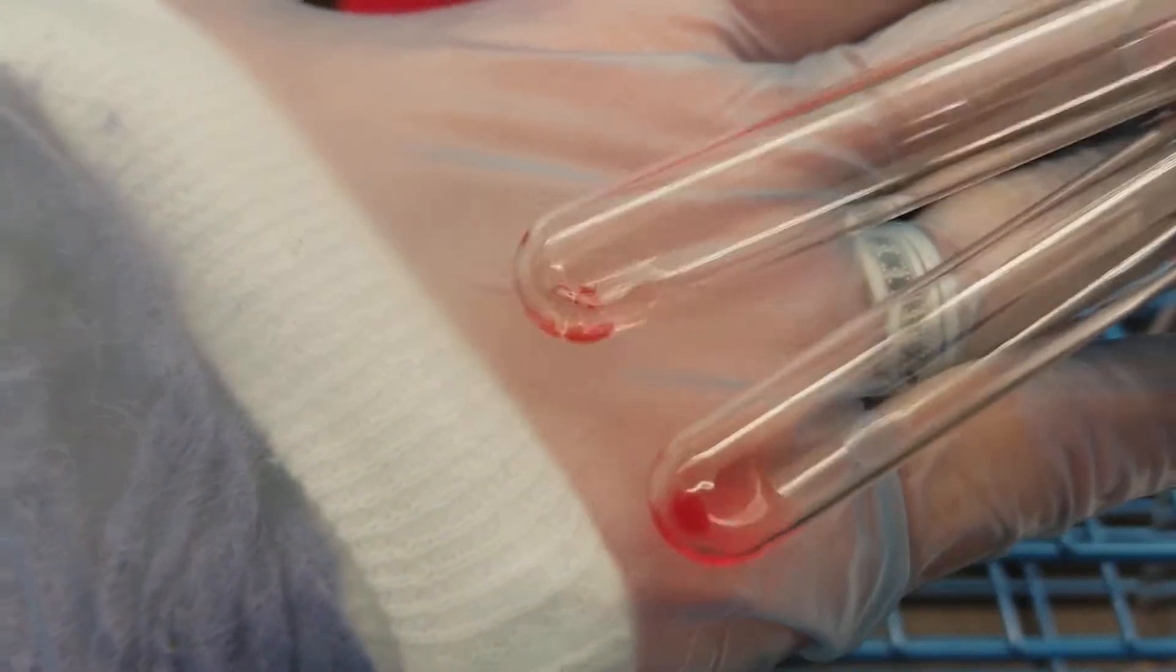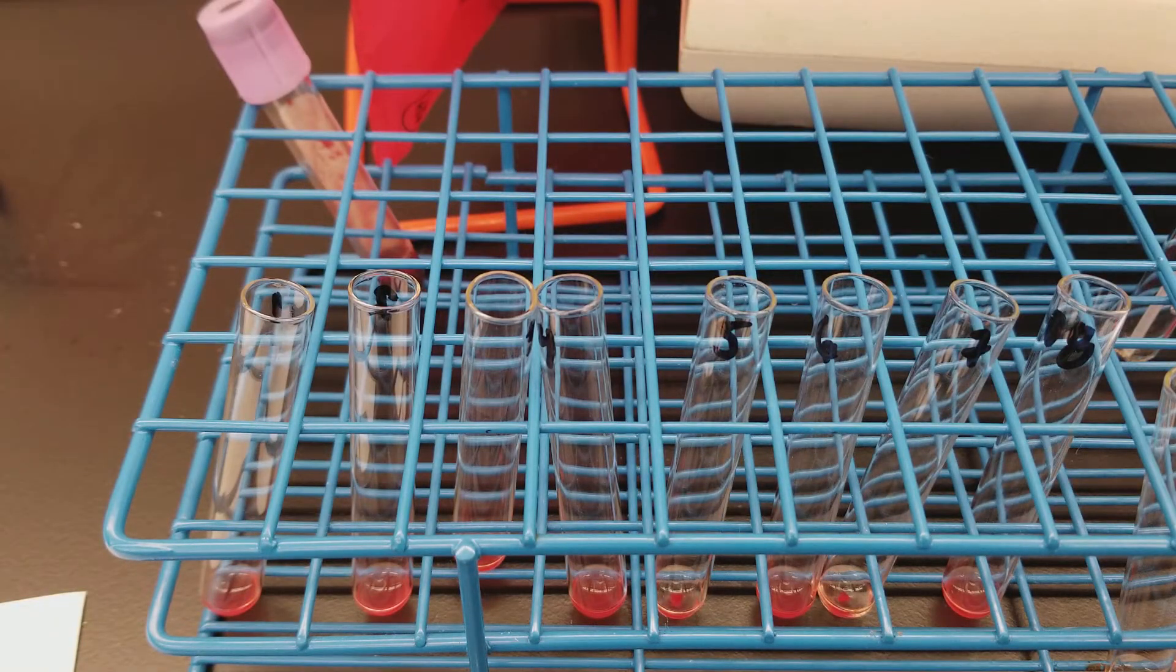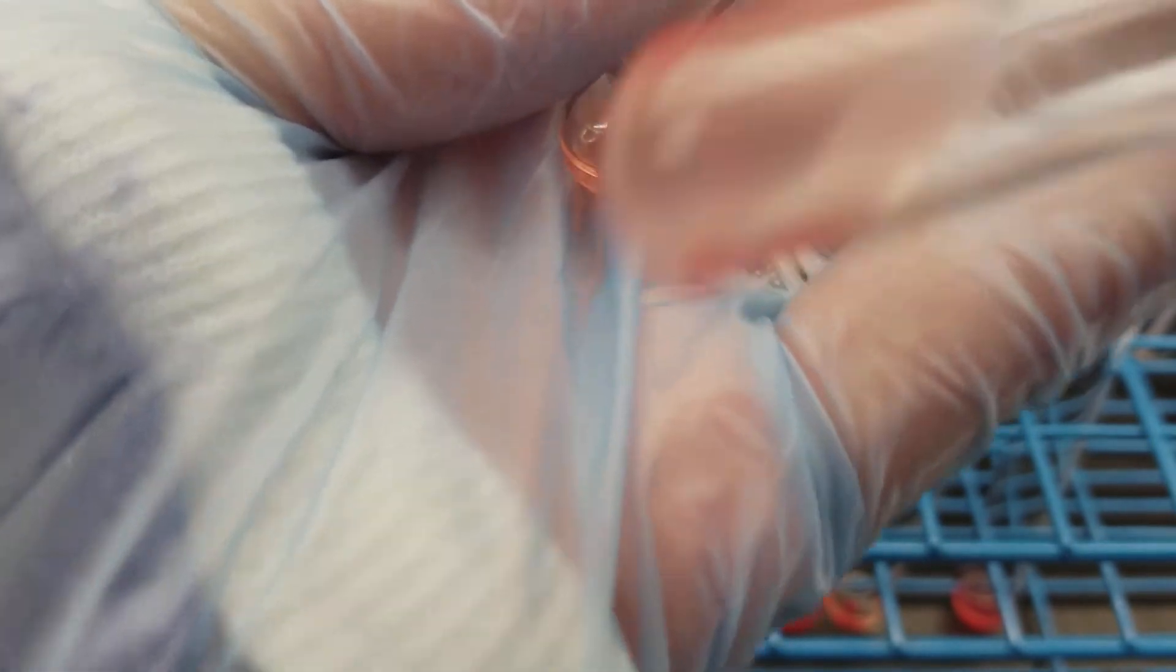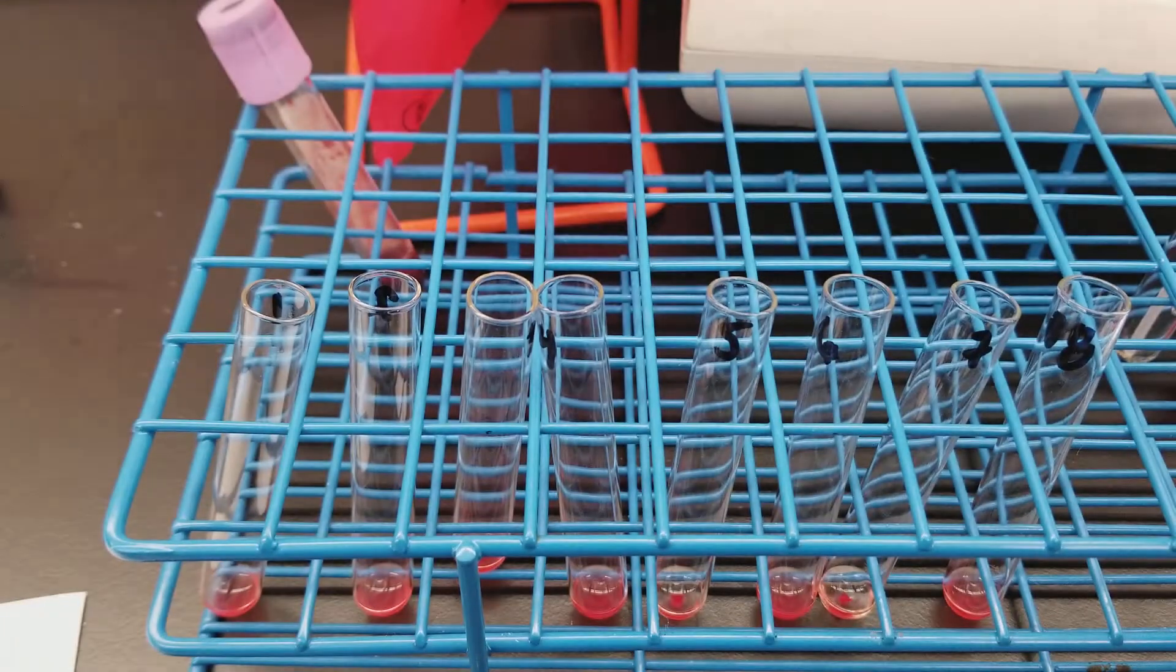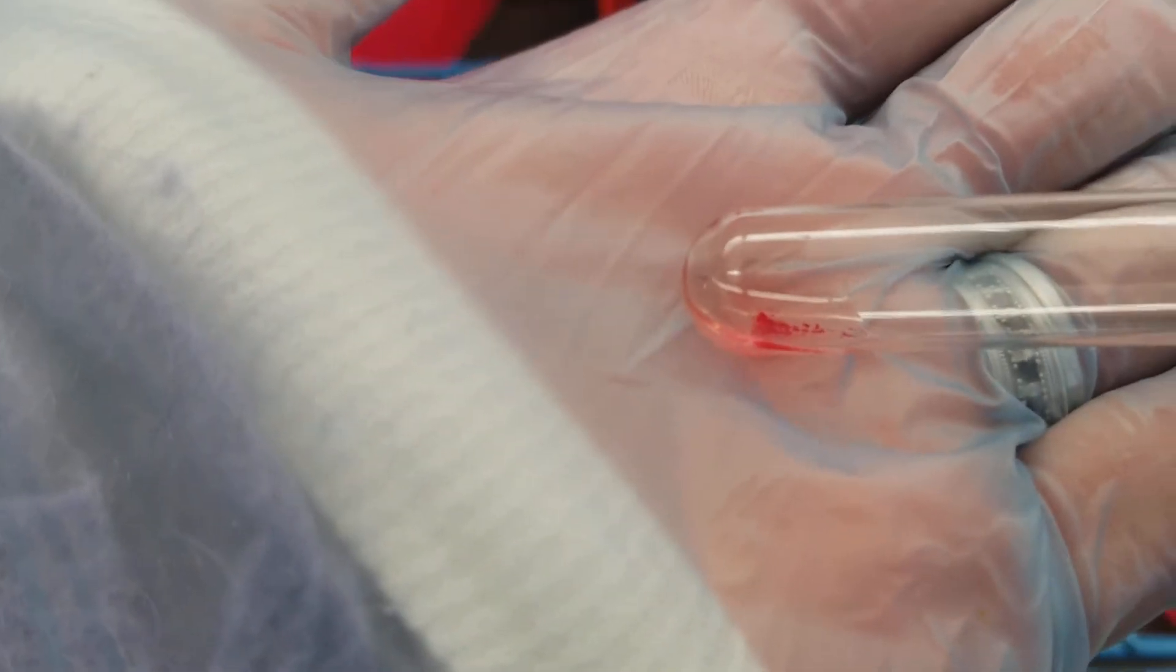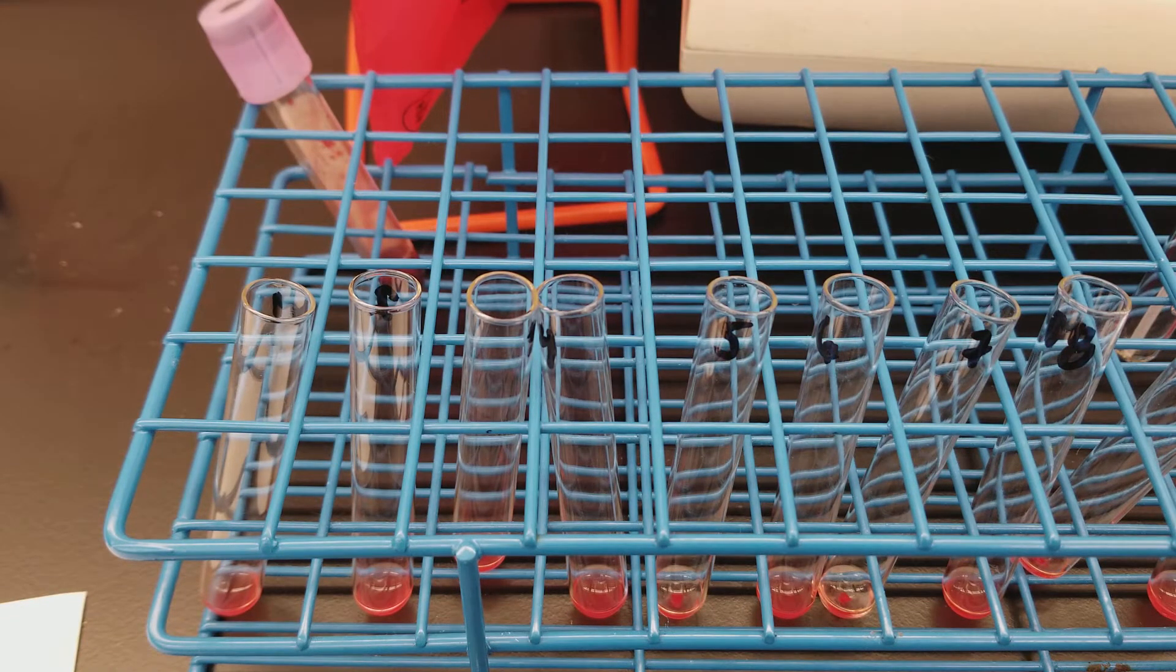Seven. Oh, seven is positive too. We're going to say that's a three plus as well. Eight's a negative. Three plus, a negative. Nine and ten. Oh, we're having some positives here. Ten is negative. I think. Yeah. Ten is negative and nine is another three plus. Some big agglutinates in there. So three plus, then negative.